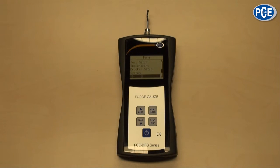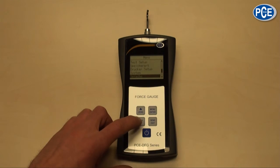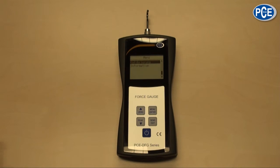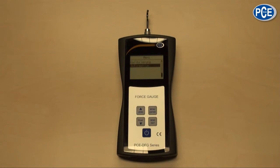Furthermore you can set the language. The calibration mode is only for the personnel of PCE Instruments intended. And in the area of information the serial number is shown.